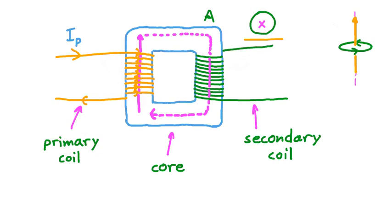For reasons we won't get into in this lesson, that current flows counterclockwise from our perspective. Of course, what we're looking at here is just a single loop in the many loops of the secondary coil, so this is going on for all of those individual loops. Finally, this induced current is output through the secondary coil and goes on to whatever its application might be — perhaps in a residential neighborhood.